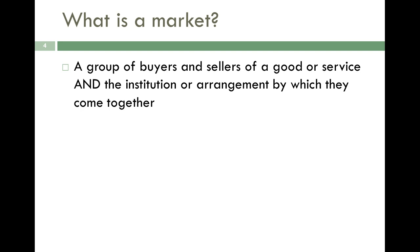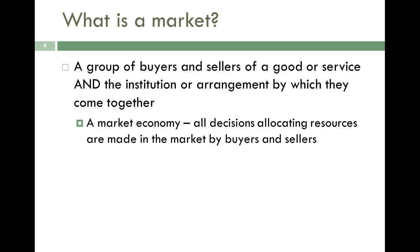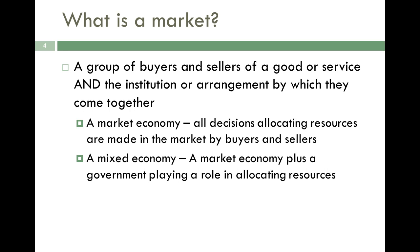What is a market? It's really just a group of buyers and sellers coming together to trade goods and services — along with the institutions or arrangements that allow them to do so. A market economy is a system where buyers and sellers making decisions allocate all resources. A mixed economy also brings in government, which makes decisions and affects the rules, thereby affecting the decisions households and producers make. We live in a mixed economy, so we'll discuss taxation and related topics, but when looking at transactions involving just a buyer and seller, we'll focus on those decisions.